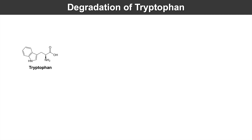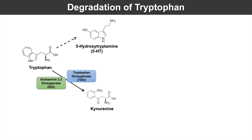So if we have tryptophan, it can be metabolized into 5-hydroxytryptamine or 5-HT. But if it's degraded, it can be acted on by two other enzymes: indolamine 2,3-dioxygenase or IDO, or tryptophan dioxygenase or TDO. These two enzymes will both process tryptophan into kynurenine.